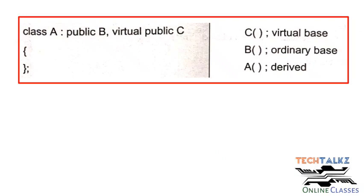If there is a virtual base class, the execution order changes. The constructor of the virtual base class executes first, then the ordinary base class constructor executes, and then the derived class constructor executes. For example: class A colon public B, virtual public C — class A is derived from normal base class B and from virtual base class C. The virtual base class C constructor executes first.